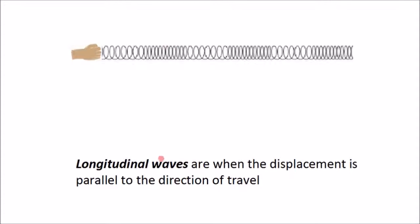Longitudinal waves are when the displacement is parallel to the direction of travel. So again, the wave travels along the slinky this way. The displacement or the disturbance or the oscillation created by my hand is parallel to the direction of travel of the wave. So I move my hand forwards and backwards and that will create a wave that travels along the slinky, and it's a wave called a longitudinal wave.